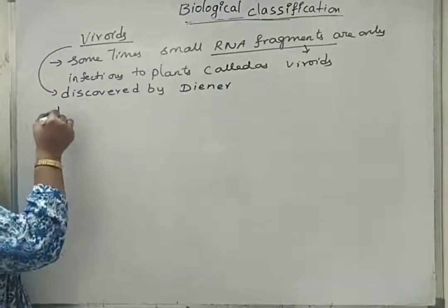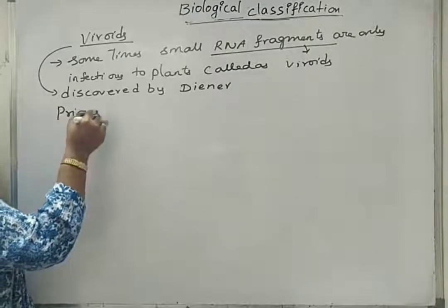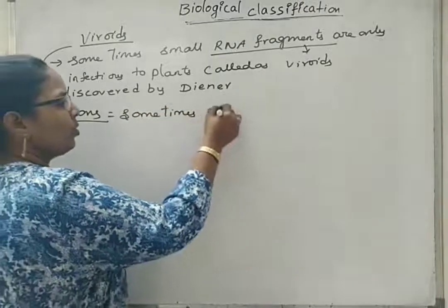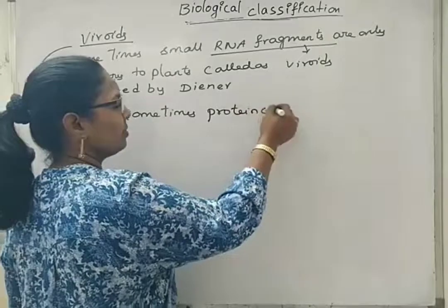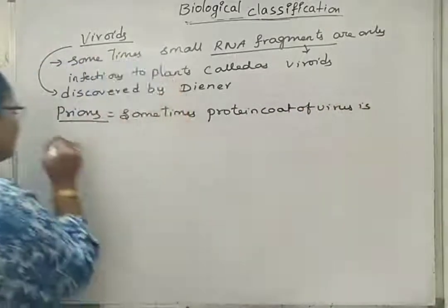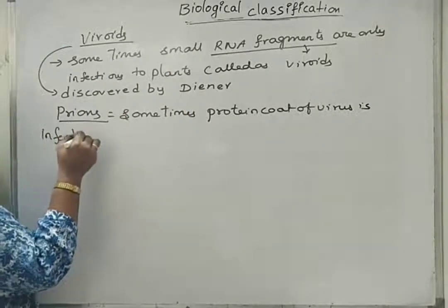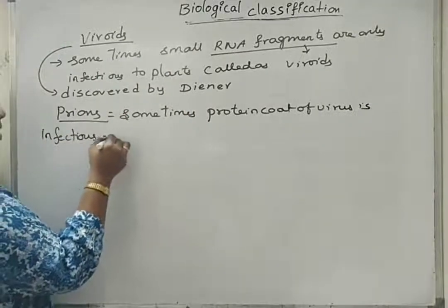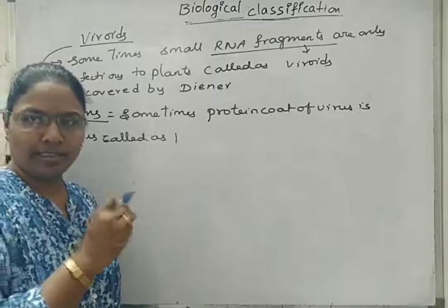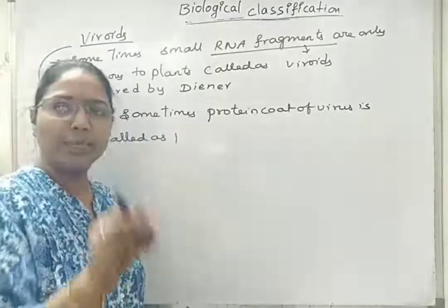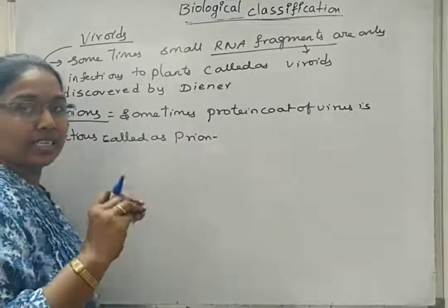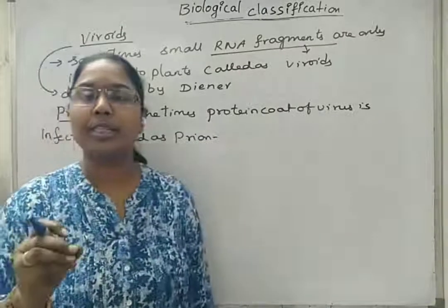Another term: prions. Sometimes the protein coat or capsid of a virus is infectious — that is called as a prion. There is no genetic material that is infectious in case of prions. Prion means only the protein coat. A prion will change the formation of one particular protein structure.